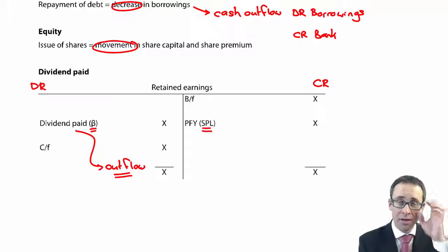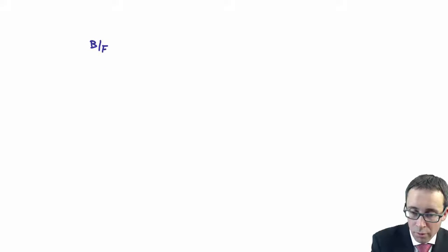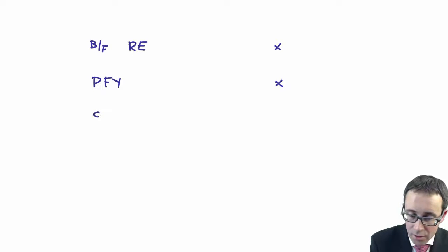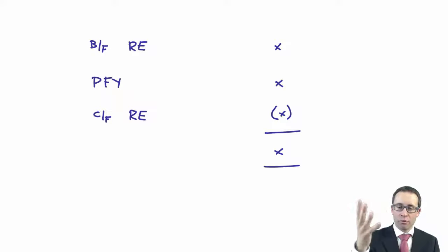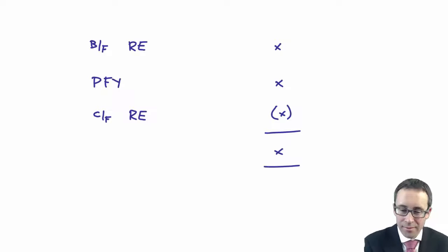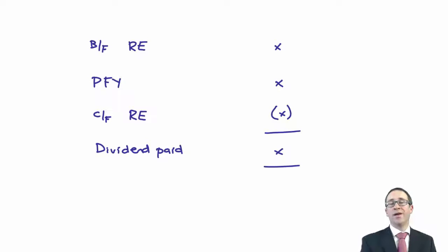If you don't like T accounts — you should be loving T accounts, you're training to be an accountant — alternatively, you could just take your brought forward retained earnings, add on your profit for the year, and then deduct your carry forward retained earnings. Essentially, that's what we're doing in the T accounts. We add up the brought forward and the profit, make that the total, then deduct the retained earnings carry forward to get the dividend paid. So you take your brought forward, add on the profit for the year, deduct the carry forward, and hey-ho, that will give you your dividend paid.